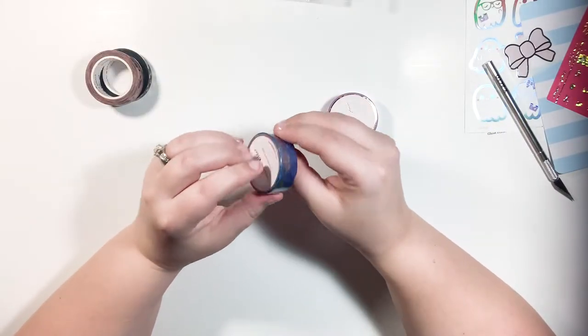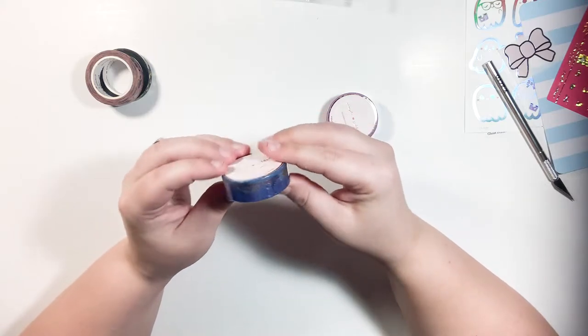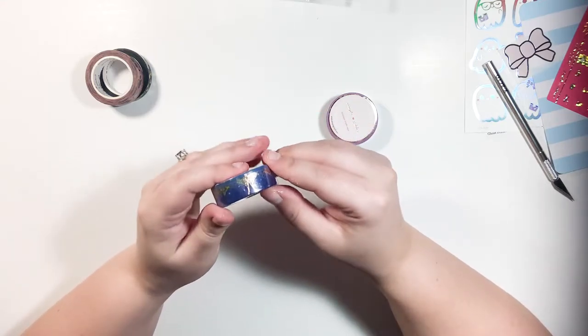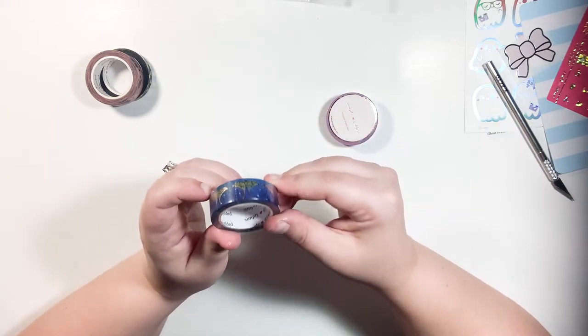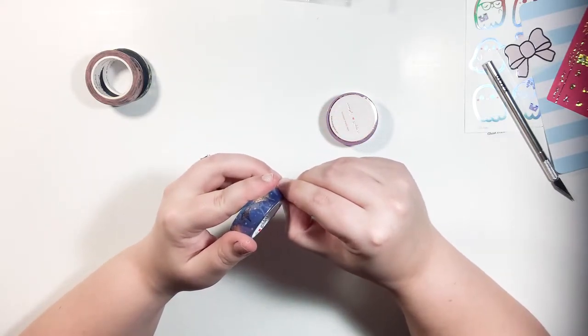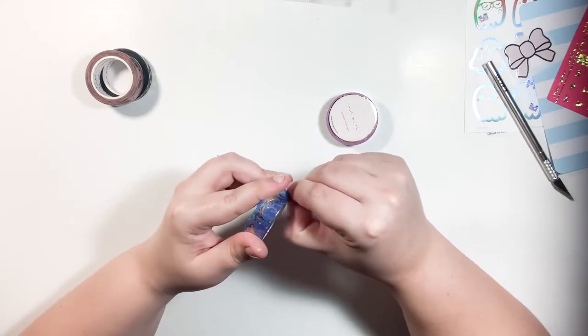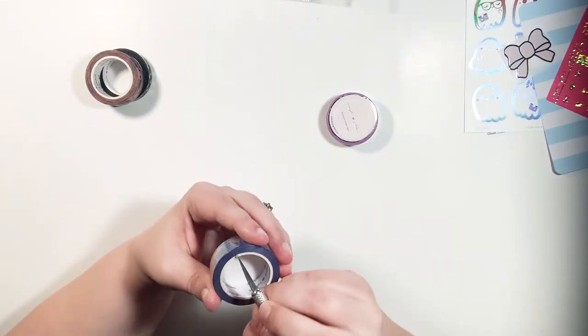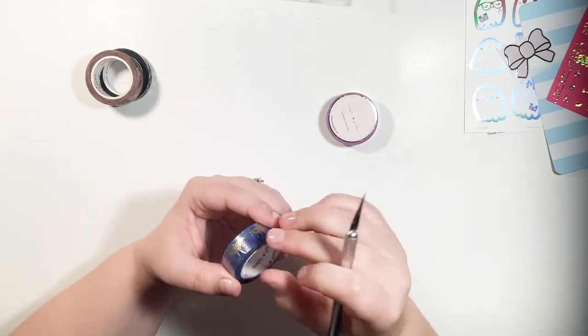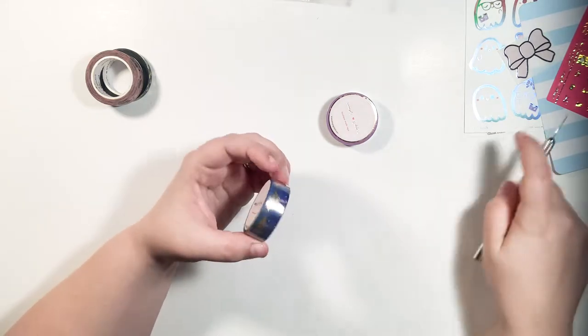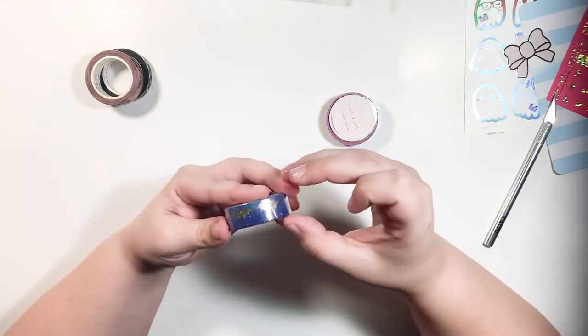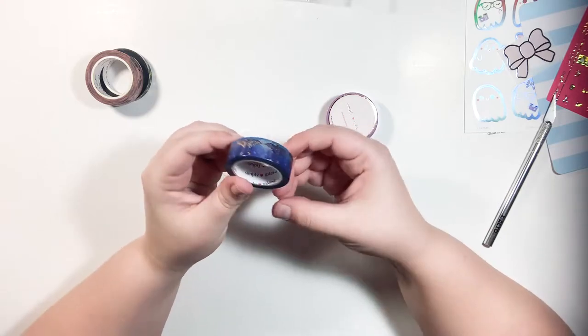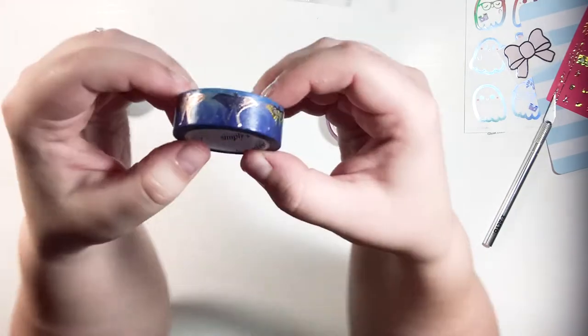This one, I am so excited about. This is a moth print. And it's like rose gold. Rose gold foil. I am obsessed. When I saw this, it reminds me of The Last of Us Part 2 with the moth and the guitar. And when I saw it, I was like, yeah. Oh my God. That is so pretty.